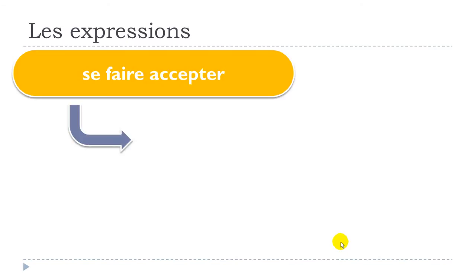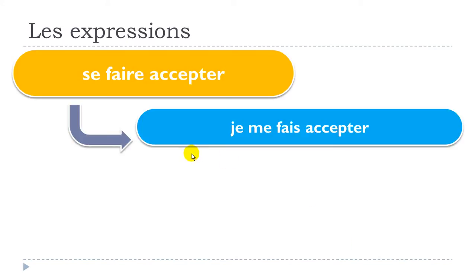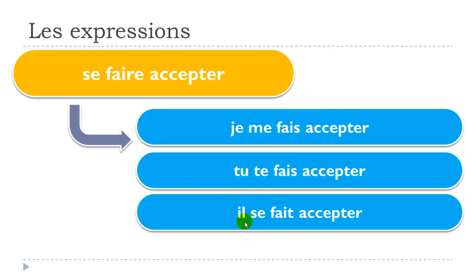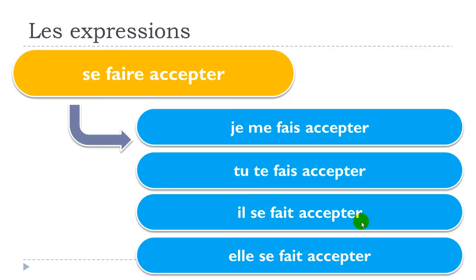Let's see how to conjugate that in the present tense. Since the infinitive form is 'se faire accepter', you will have to modify the 'se' when conjugating. For the first person: 'je me fais accepter'. For the second person: 'tu te fais accepter'. Third person masculine: 'il se fait accepter'. Feminine: 'elle se fait accepter'.